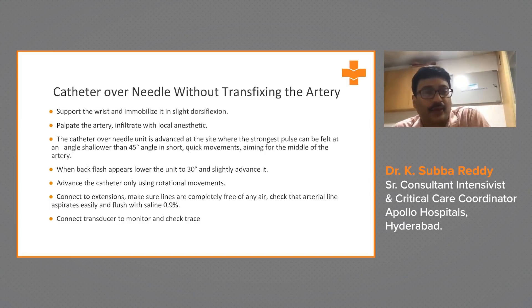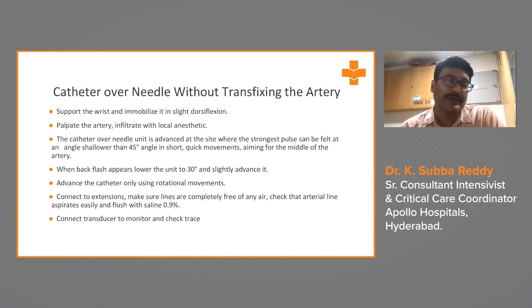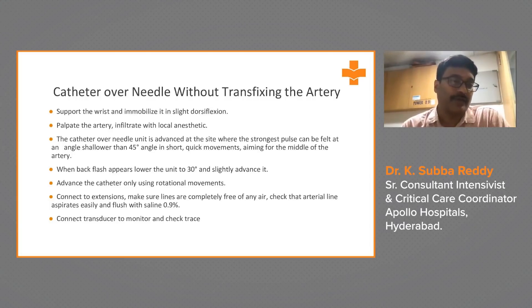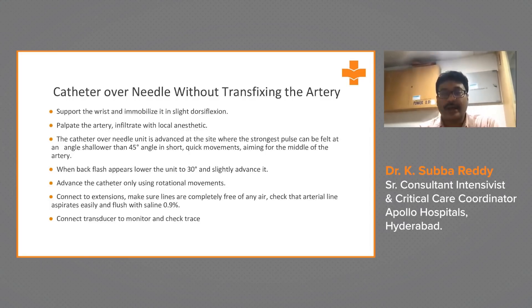Palpate the artery and infiltrate with local anesthetic. The catheter-over-needle unit is advanced at the site where the strongest pulse is felt, at an angle shallower than 45 degrees, in a short quick movement aiming for the middle of the artery. When backflush appears, lower the unit to 30 degrees and advance the catheter using rotational movements. Connect to the extension set, ensure lines are free of air, check the arterial line aspirates easily, flush with 0.9% saline, and connect the transducer to monitor to check the trace.